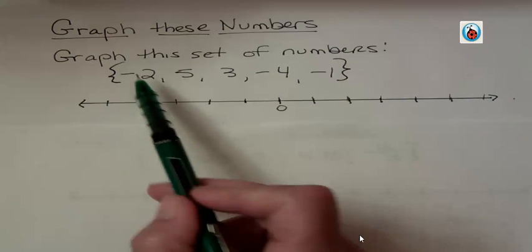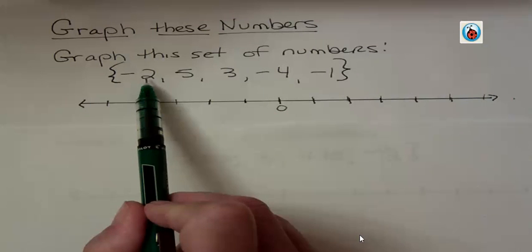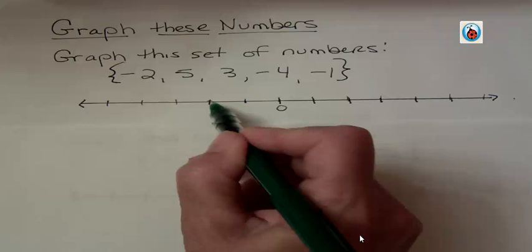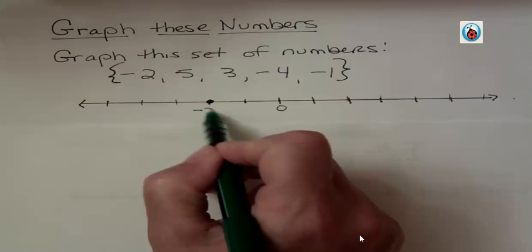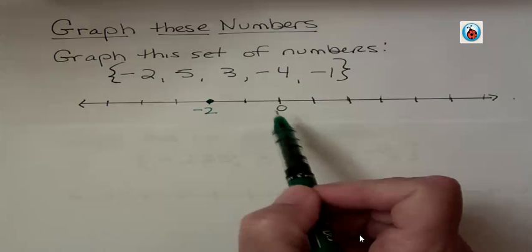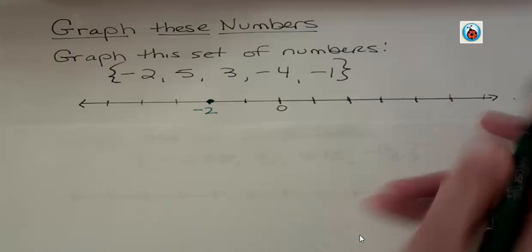If I want to put zero on my number line here and I want to graph negative two — when you want to plot something, what you want to do is put a point there and then label it as negative two. If you do this on the Math Excel program, you're going to point on that and drag it and drop it in the right place. Negative two is left of zero. Five is one, two, three, four, five — to the right of zero.